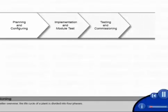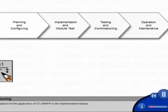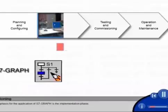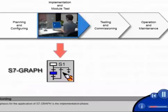For a better overview, the life cycle of a plant is divided into four phases. The emphasis for the application of S7 Graph is the implementation phase.